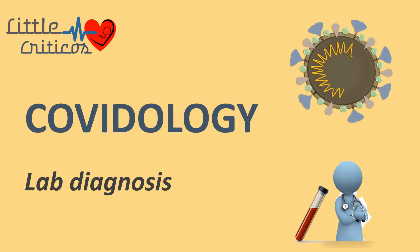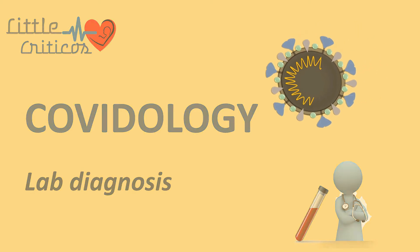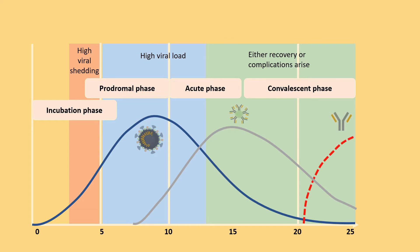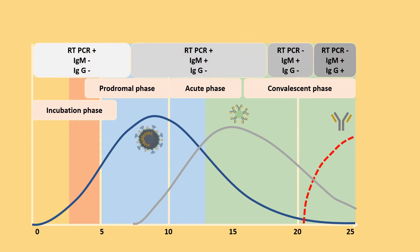This lecture covers laboratory diagnosis of SARS-CoV-2 infection. As we know from the previous lecture, SARS-CoV-2 infection follows an incubation phase, a prodromal phase, an acute phase, and then a convalescent phase. The initial phase is characterized by high viremia. The antibody response starts within a few weeks, initially as an IgM response and later as an IgG response. In an index case, RT-PCR may be used in the early phase of illness, and IgM and IgG may be used during the convalescent phase.